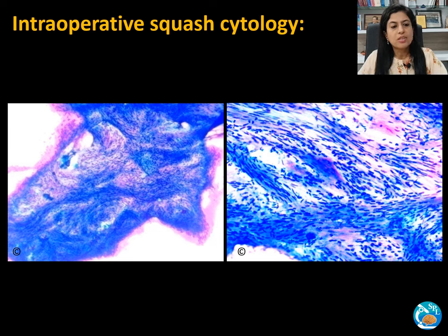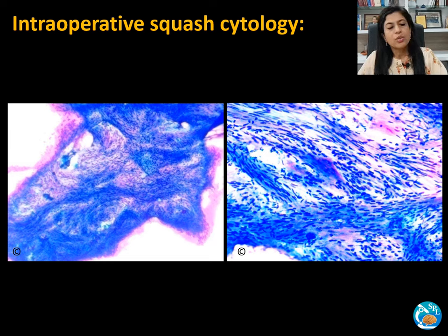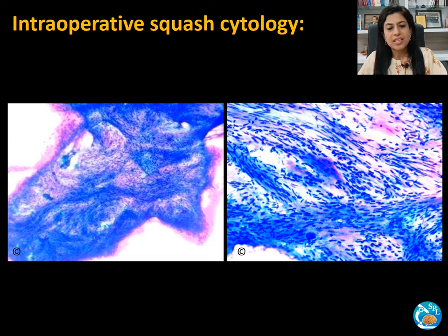This is the intraoperative squash cytology of case one. The smears are cellular and you can see the neoplastic spindle cells arranged in bundles and fascicles, leading to a twisted rope appearance. The cells are elongated with tapering ends, which is typical of Schwann cells, and these have a moderate amount of cytoplasm.